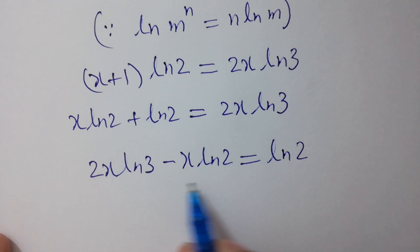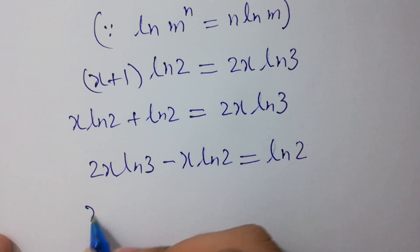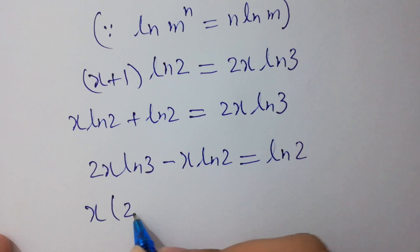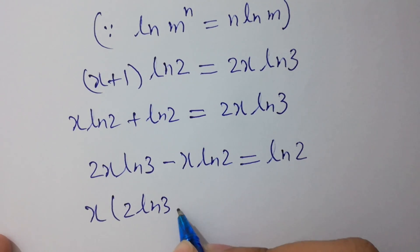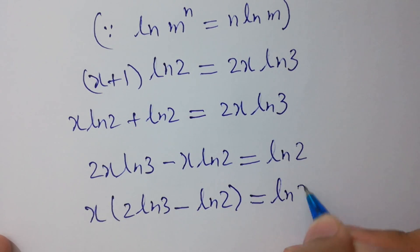We can compute the value of x. We have x times 2 log 3 minus log 2 equals log 2.